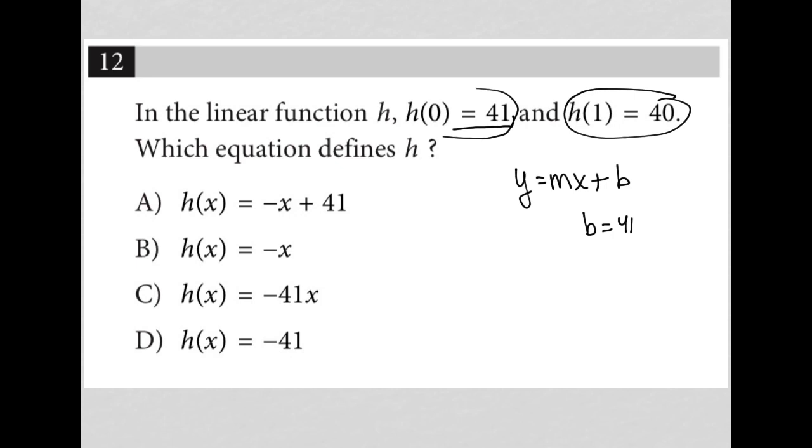Because the question tells me here, that basically this means that when x equals 0, y equals 41. That's basically what that means. I'm replacing x with 0, and h of x equals 41. h of x is the same as y, always.